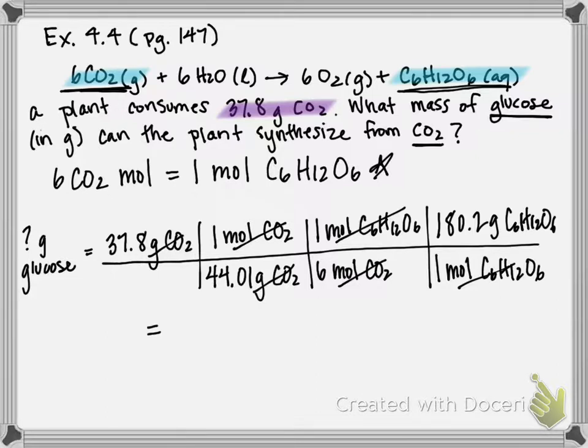And the only unit that doesn't cancel is what I'm trying to get to, grams of glucose. So if I multiply across 37.8 times 1 times 1 times 180.2, divide that by the numbers on the bottom, you should get that you can produce 25.8 grams of C6H12O6 or glucose. And that is your final answer.